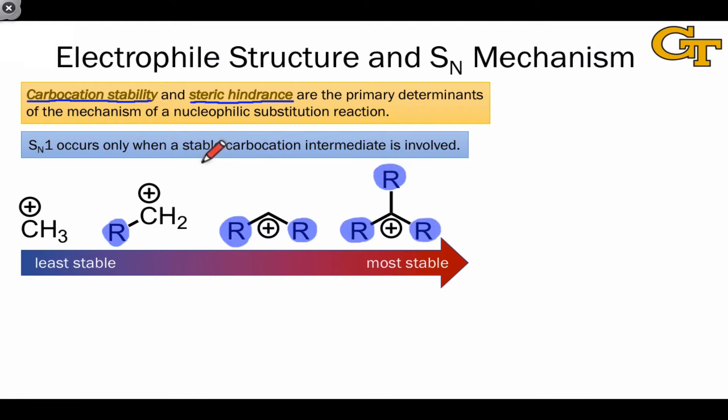For our purposes, there's a clean dividing line between primary and secondary carbocations. Primary carbocations, for our purposes, will not form in reaction mechanisms. They're too unstable. And the same is true of methyl carbocations, which lack substituents completely.